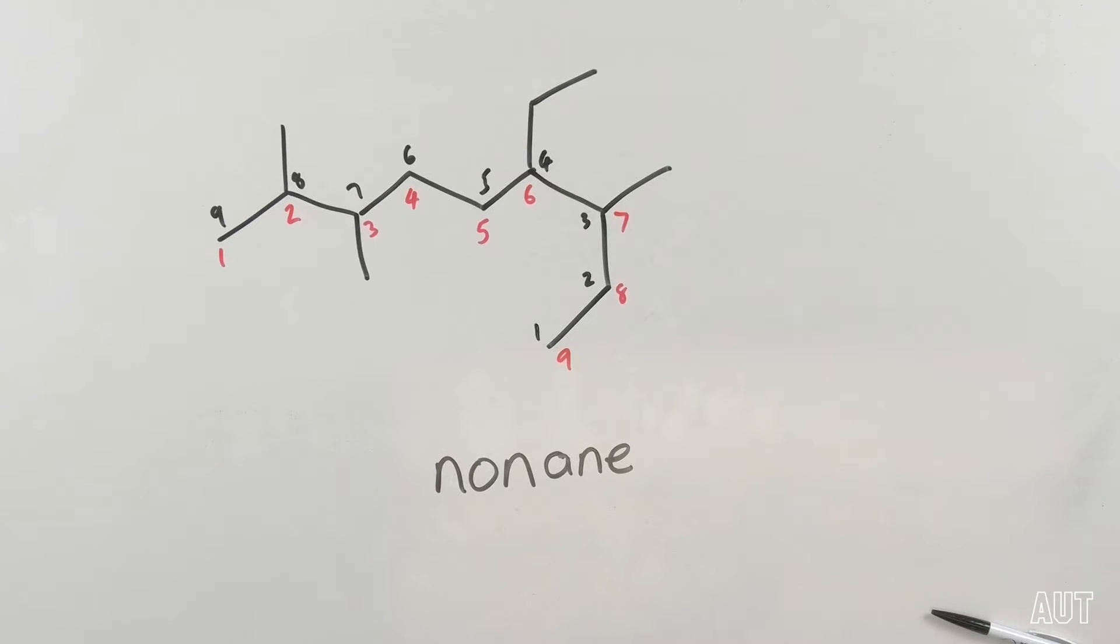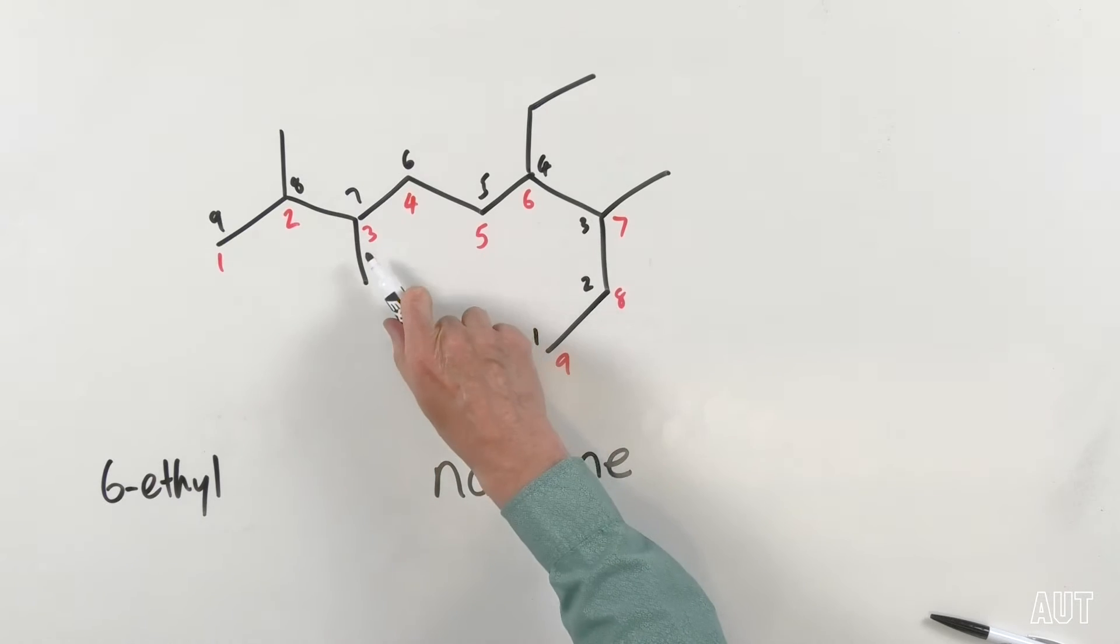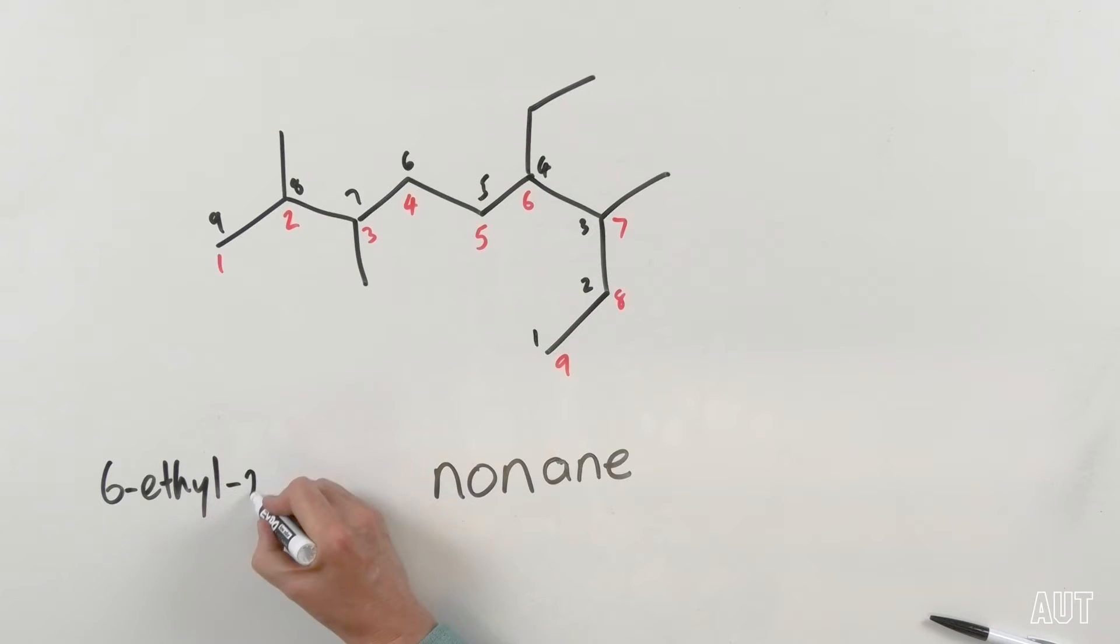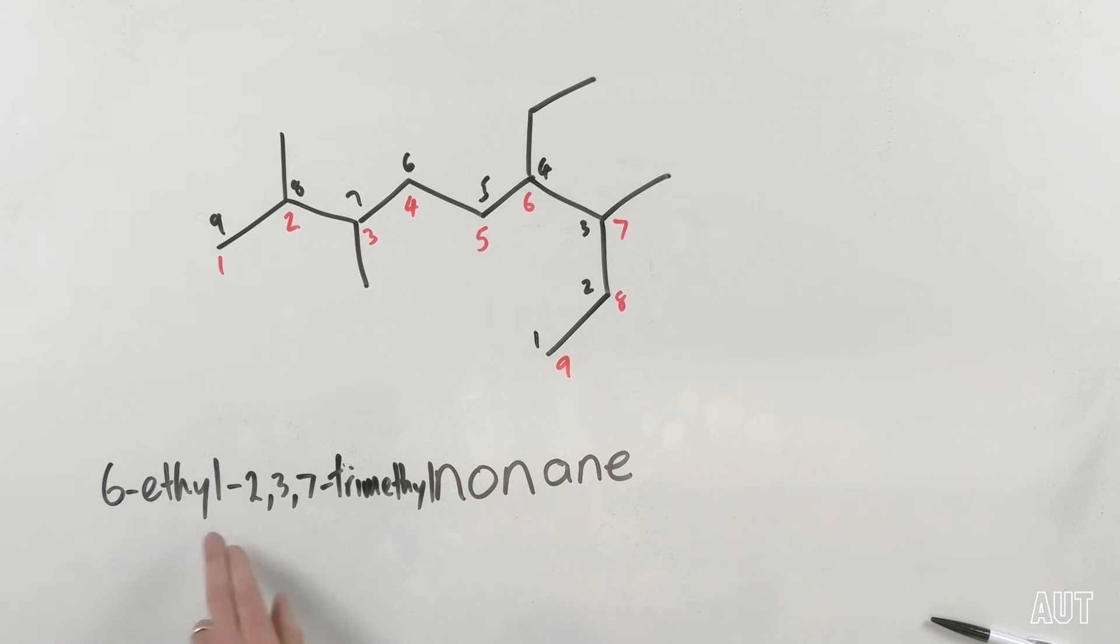And one last little rule here is that when we have got a mixture of substituents as we do here, we go in alphabetical order. So alphabetically ethyl beats methyl, so ethyl is going to come first. Ethyl is at carbon 6, so we're going to go 6-ethyl. And then we've got all of these methyl groups at 2, 3, and 7. So therefore we are going to go 2,3,7-trimethylnonane. So in this case, 6-ethyl-2,3,7-trimethylnonane is going to be the name for that particular alkane.